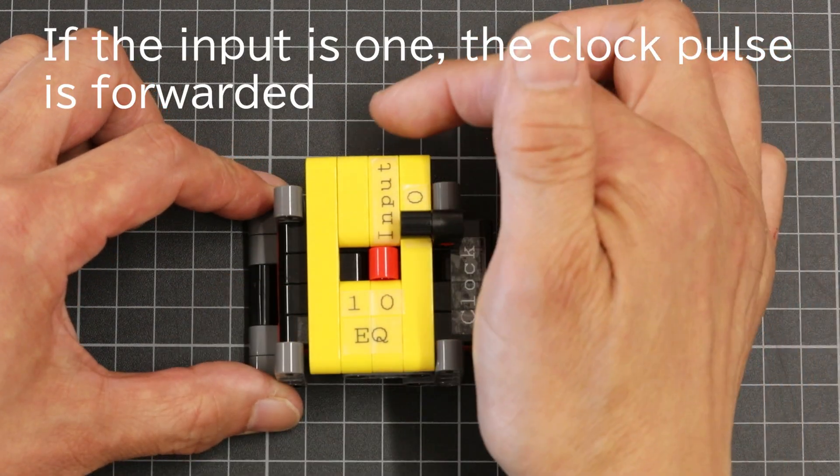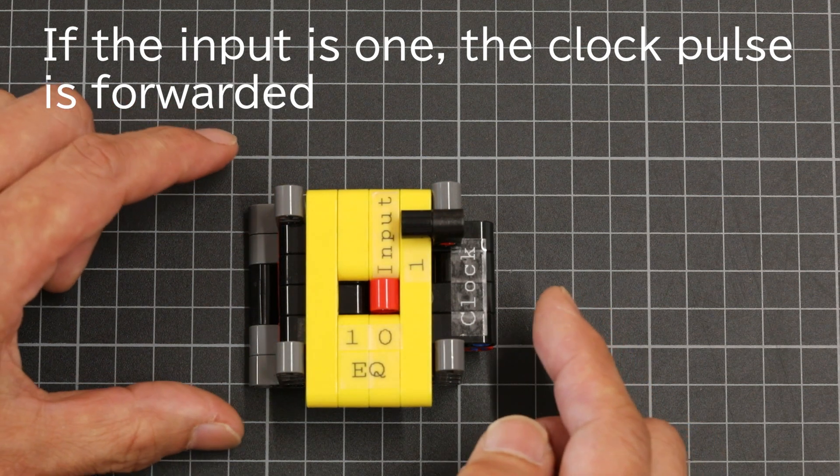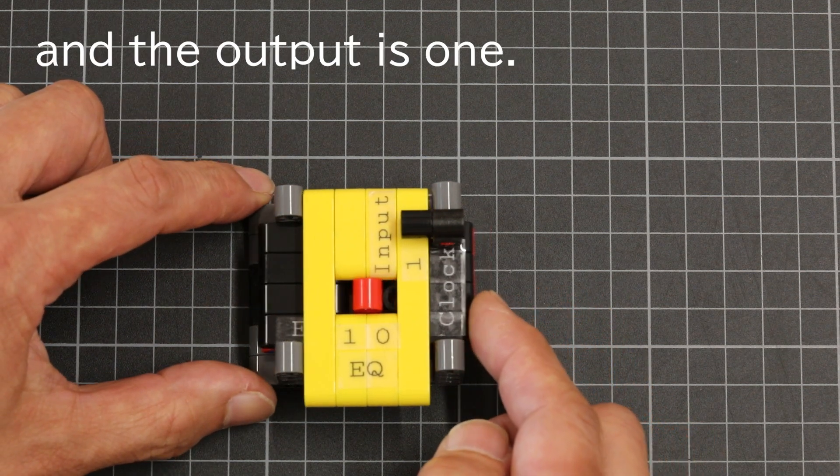If the input is 1, the clock pulse is forwarded and the output is 1.